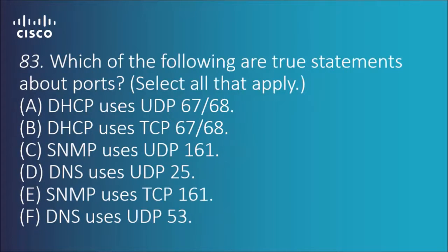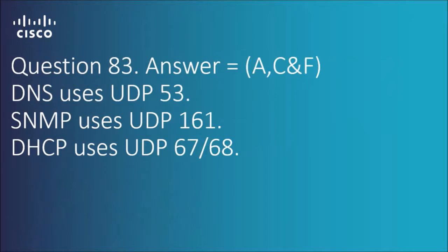Question 83: which of the following are true statements about ports? We've got a few options here, so we're just looking for whichever ones are correct once again. It's more or less just memorization. The answers are A, C, and F. DNS uses UDP 53, SNMP uses UDP 161, DHCP uses UDP 67 and 68.